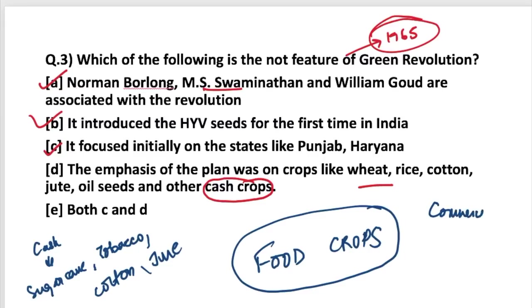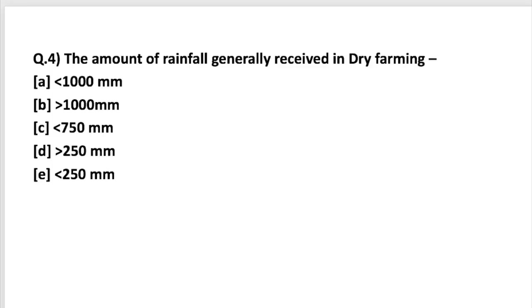Commercial crops such as coffee, tea, and rubber were also not part of the Green Revolution plan. So the incorrect statement is that the emphasis was on cash or commercial crops — it was actually on food crops. The next question: what is the amount of rainfall generally received in dry farming? Most agriculture in India is based on dry farming. Dry farming refers to cultivation in areas where rainfall is below 750 mm or 75 cm — these arid regions are known as dry land farming areas.